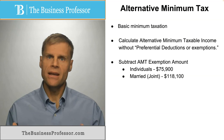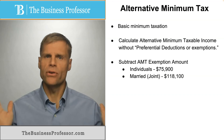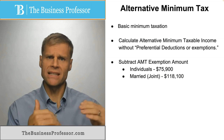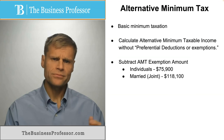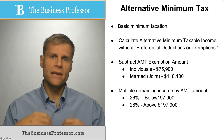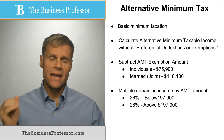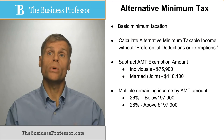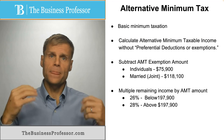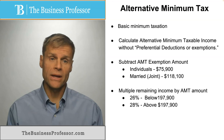This exemption is meant to create some form of standard deduction, reducing your amount of income. After you've subtracted that from your taxable income, you multiply the remaining income by specified percentages. If you have income below $197,000 — again, these are 2023 numbers — you would calculate 26% of that taxable income amount. This is your alternative minimum tax amount, which you then compare to your traditional amount.